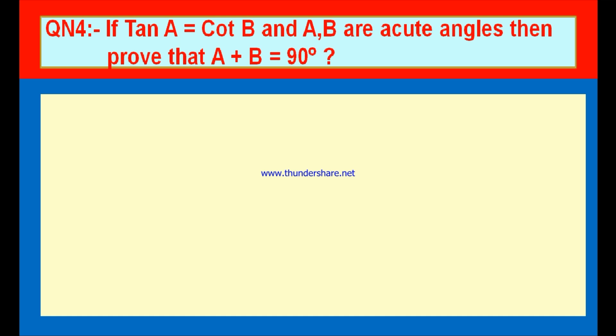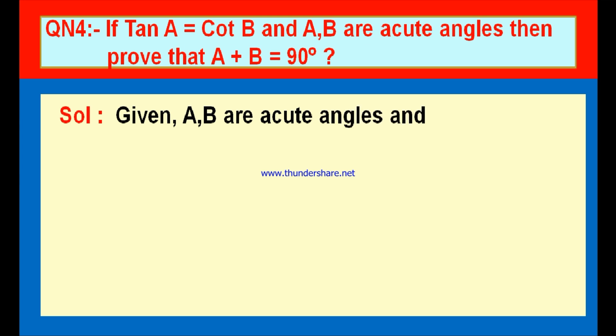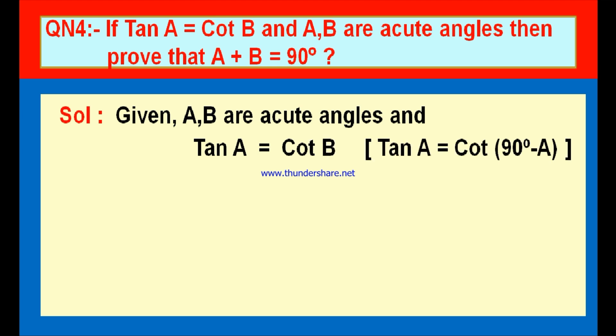We have to prove that A plus B is equal to 90 degrees. We are given A and B are acute angles and tan A is equal to cot B. The trigonometrical ratio of tan A is equal to the ratio of cot B. Both are equal, so we should prove that the sum of both angles A and B is equal to 90 degrees. If you observe LHS, you can find tan; and at RHS, you find cot. The trigonometrical ratios on both sides are different — one is tan and the second is cot.